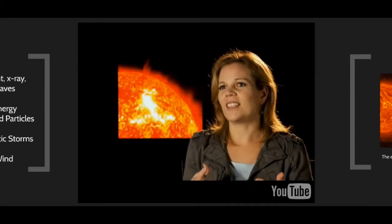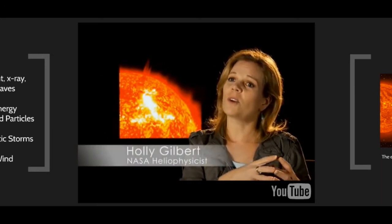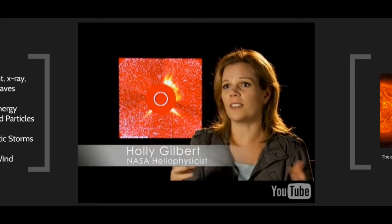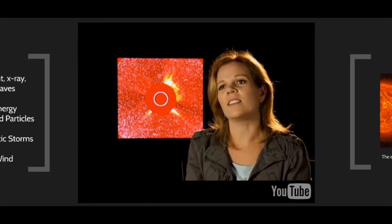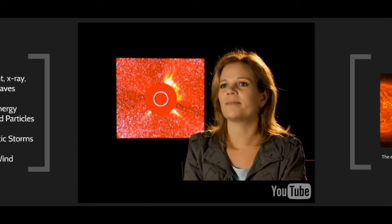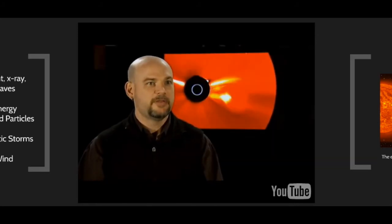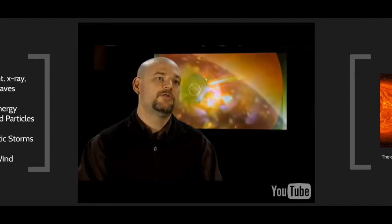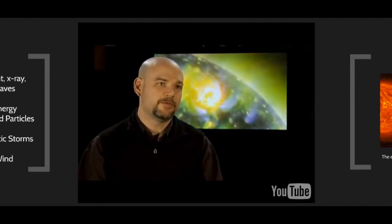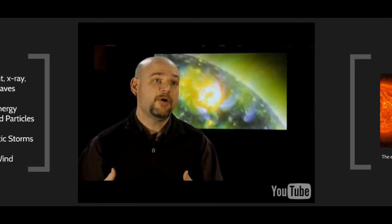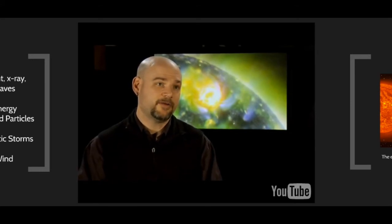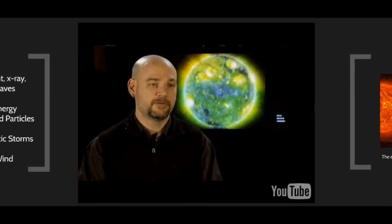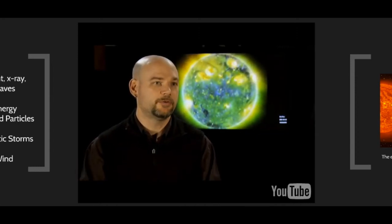Space weather is the field that studies how what happens on the Sun affects us here on Earth and in our near-space environment. For a large eruption, the Sun produces a flash of light called a solar flare and a huge ball of material traveling away from the Sun called a coronal mass ejection. Both phenomena can accelerate subatomic particles called solar energetic particles, and these three things together make up a solar storm.